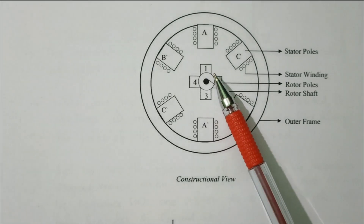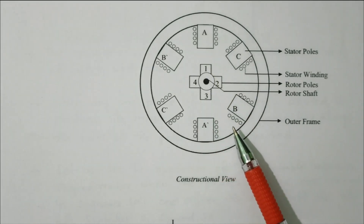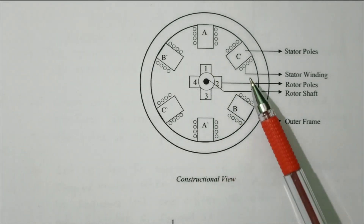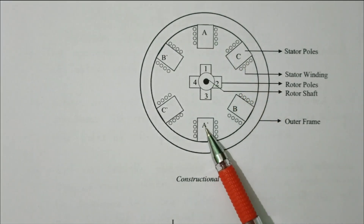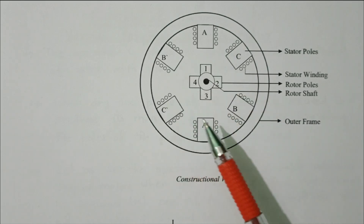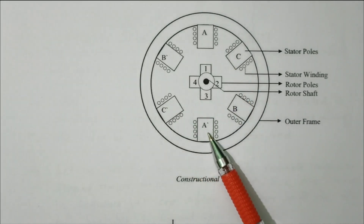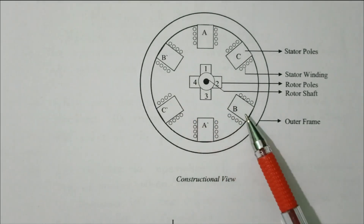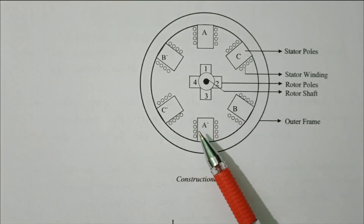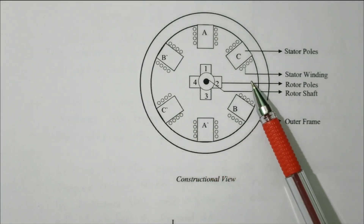This is the rotor shaft and rotor bolts. There are four rotor poles available: one, two, three, four. The stator poles are labeled a/a-dash, b/b-dash, c/c-dash. a/a-dash are connected vertically in series; b/b-dash also connected in series; c/c-dash connected in series. So the windings are available.